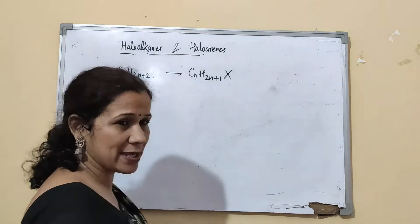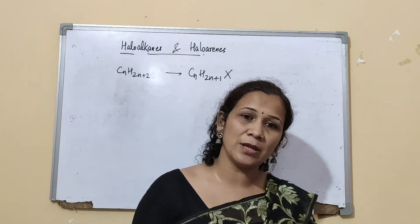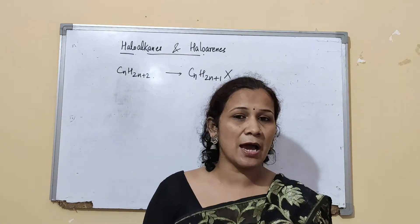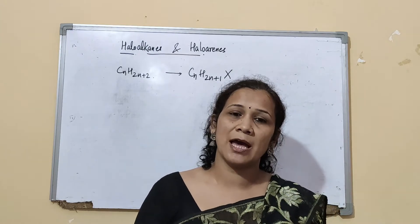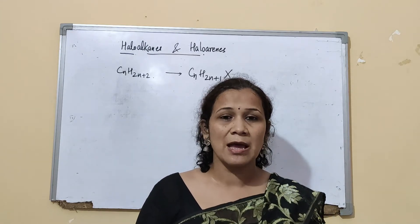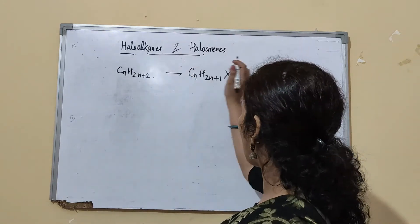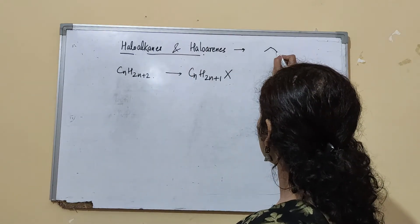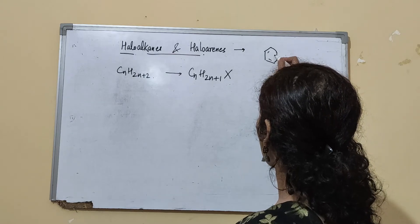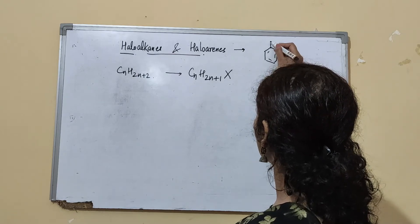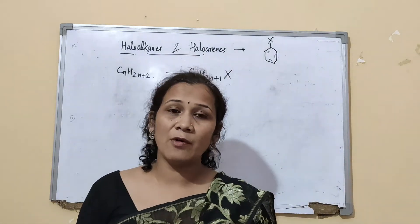X can be fluorine, chlorine, bromine, or iodine. Anything where you replace a hydrogen by a halogen is known as a haloalkane. Haloarenes will have a ring and a halogen attached to it, and we will be dealing with these in detail.